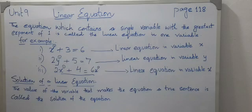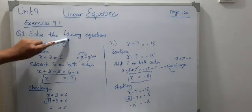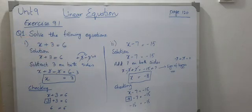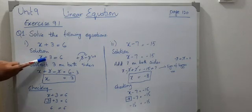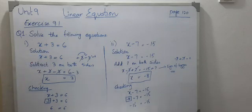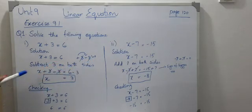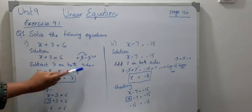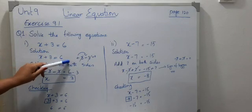Exercise 9.1. The equation given is x plus 3 equals 6. Solution: x plus 3 equals 6. Here is the left hand side with plus 3, and the opposite of plus 3 is minus 3. So we subtract 3 on both sides — whatever we do, we have to apply on both sides.